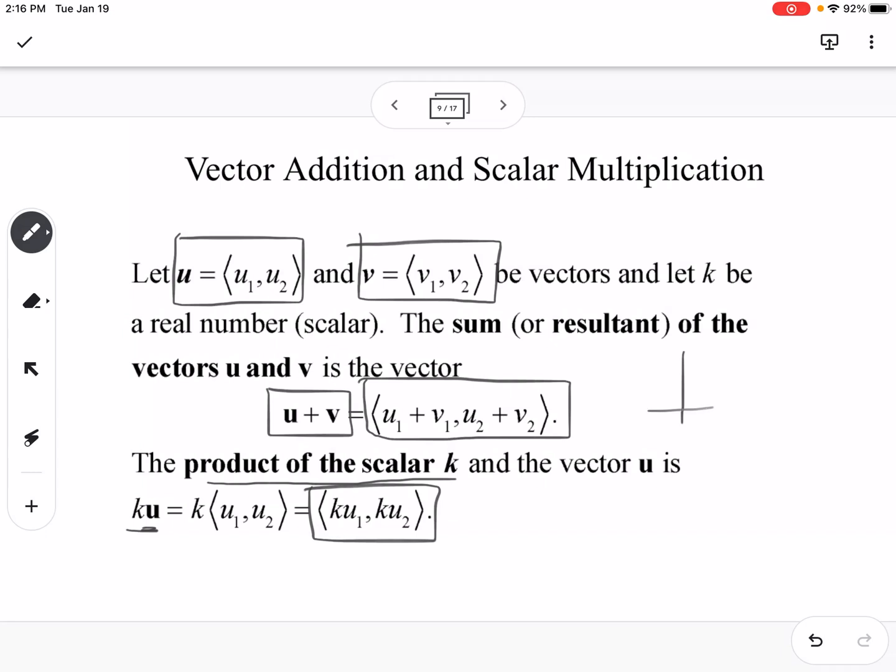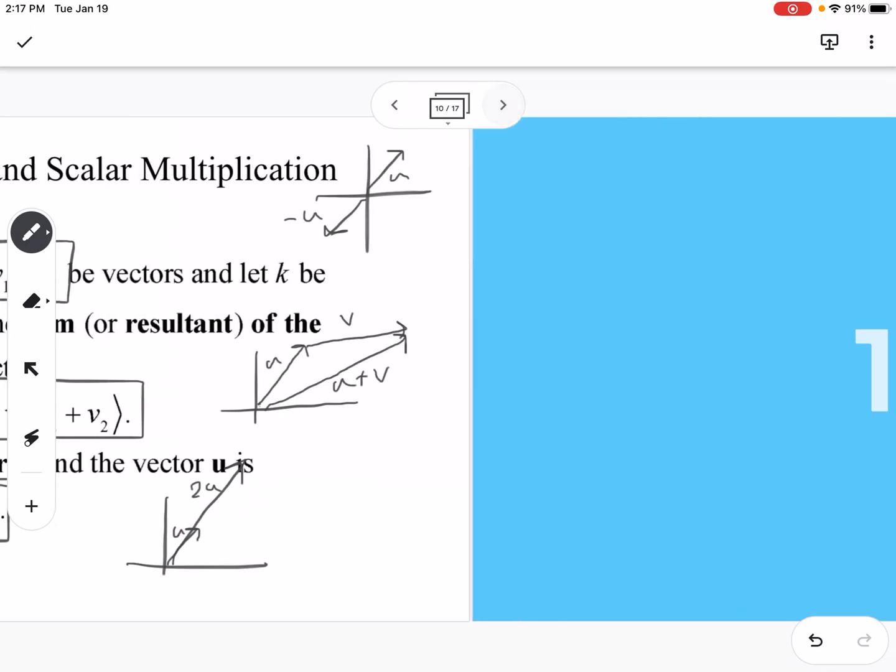To visualize vector addition, if I have vector u and then I want to add onto it vector v, this resulting vector would be u + v. And you can add negative values too, so if this is vector u, this would be vector -u. So you could do u + (-v), and so on. When we're talking about multiplying by a scalar, so if this is u, this would be 2u. You're scaling the vector to a larger or smaller vector resulting from that.